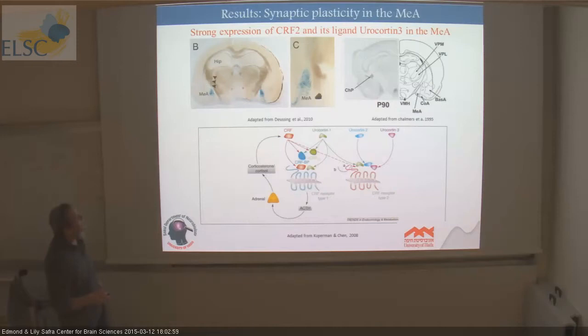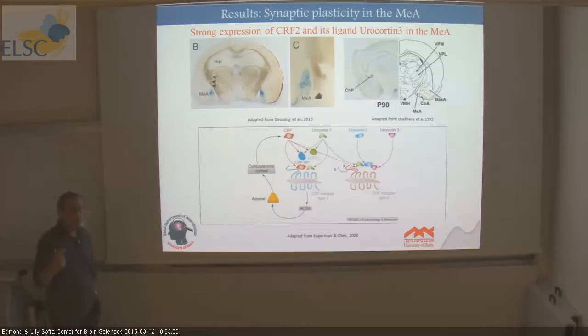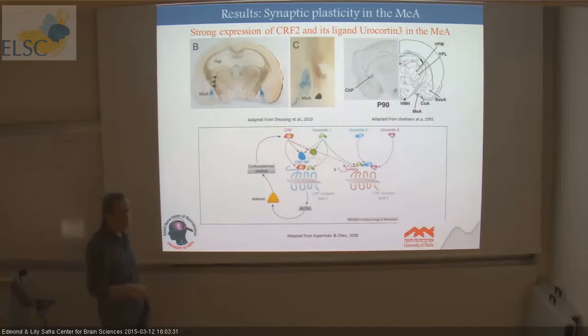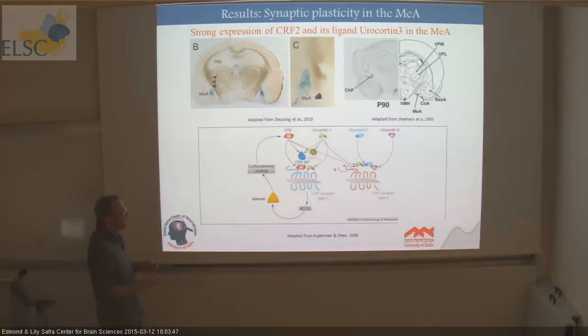There are several neuropeptides associated with the CRF receptor: CRF itself, urocortin 1, 2, and 3, acting through CRF1 and CRF2 receptors. The medial amygdala is one of the very few areas in the brain that strongly expresses the urocortin 3 neuropeptide, and it is also endowed with relatively high levels of the CRF2 receptor. So maybe urocortin 3 and CRF2 comprise a system that changes the response of the medial amygdala to stimuli arriving from the accessory olfactory system, even in the presence of oxytocin, if this kind of person is really annoying.